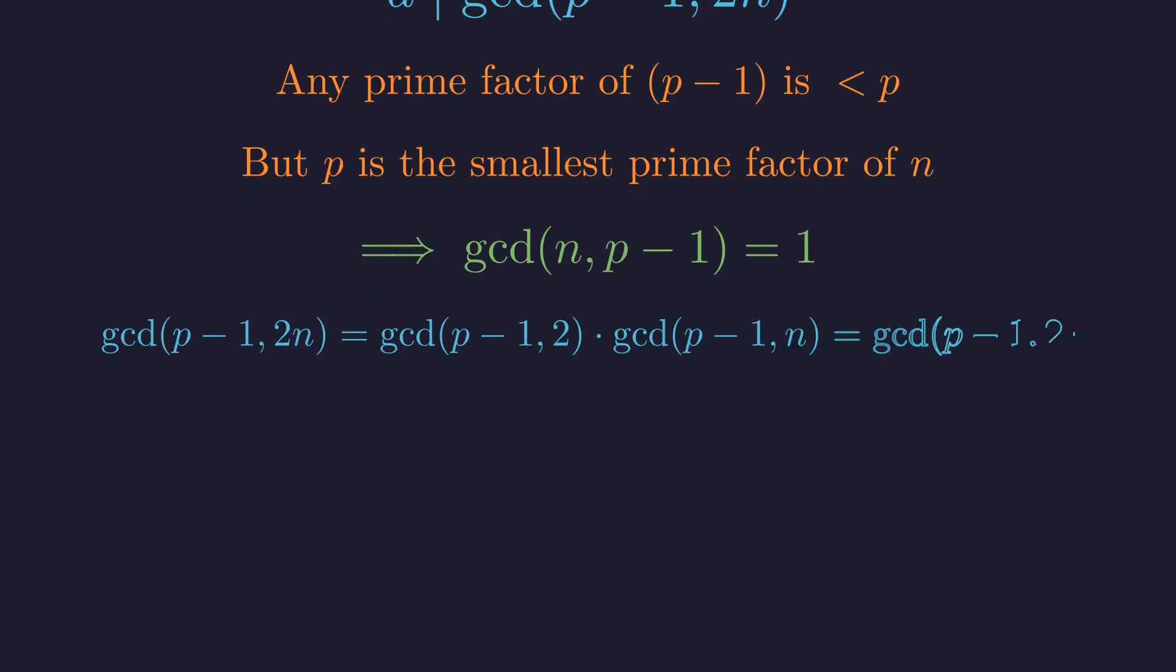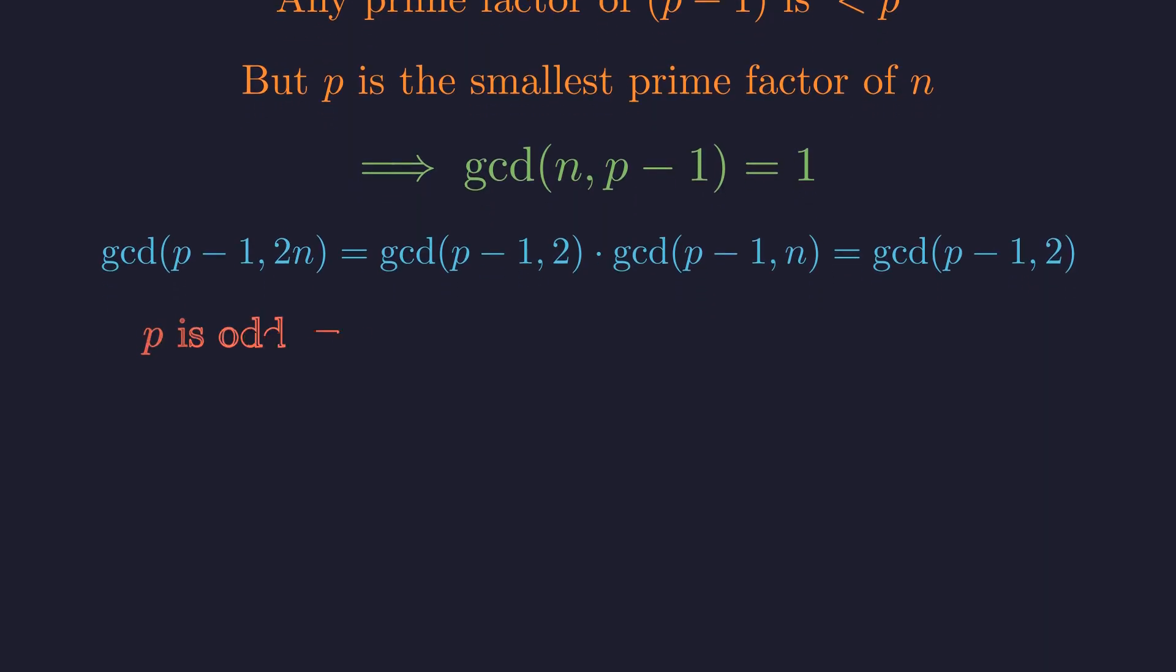Here we use a key property of the greatest common divisor. Since n and p minus 1 are coprime, the only factor that 2n can contribute to the GCD with p minus 1 is the factor of 2 itself. Since p is odd, p minus 1 is even, so the greatest common divisor of p minus 1 and 2 is exactly 2.